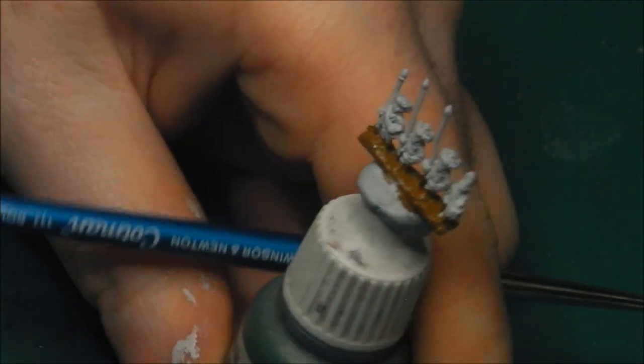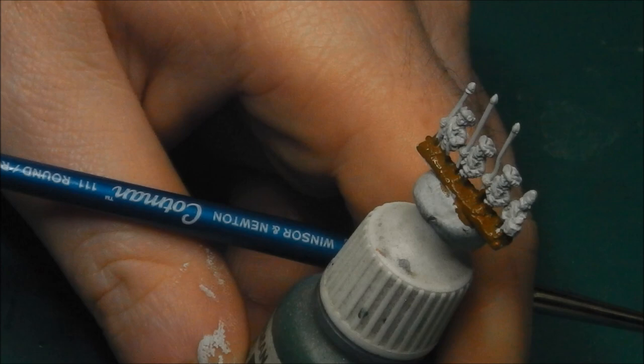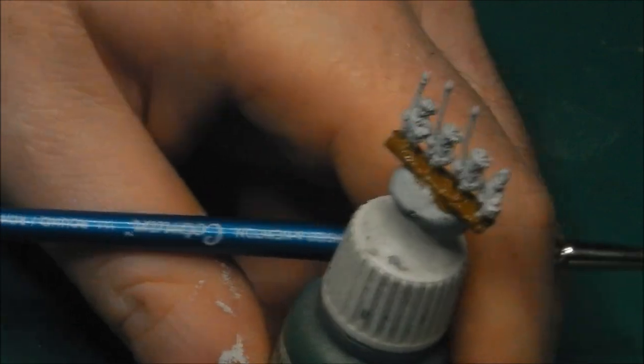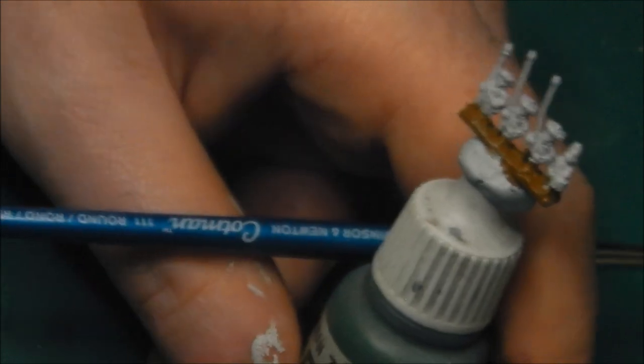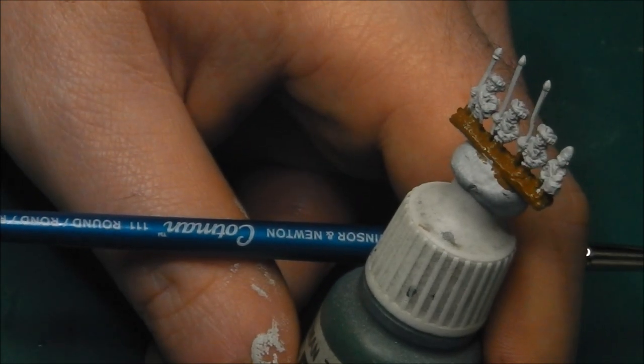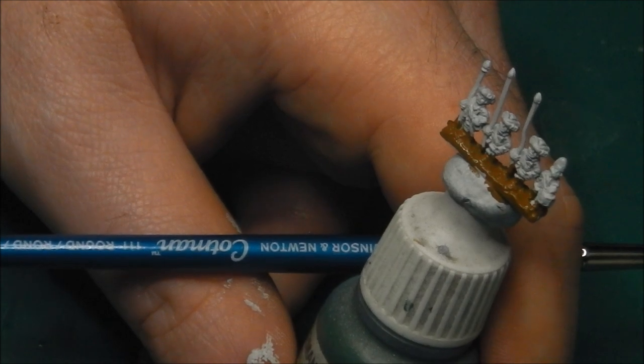The base painted in, now we're going to start working on the uniforms. The uniforms for the British Line Infantry at this era is basically a scarlet red for their tunics and a very light woolen grey for their trousers.